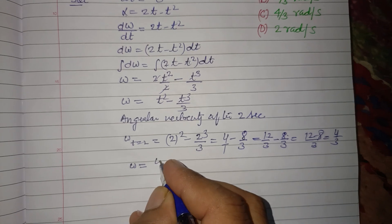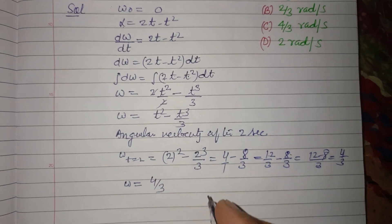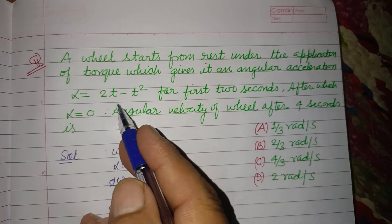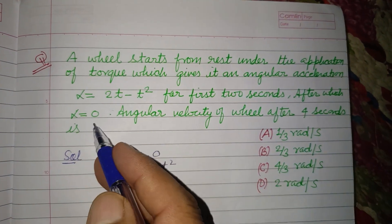So ω is 4/3 after 2 seconds, and α is given to us as zero after 2 seconds.